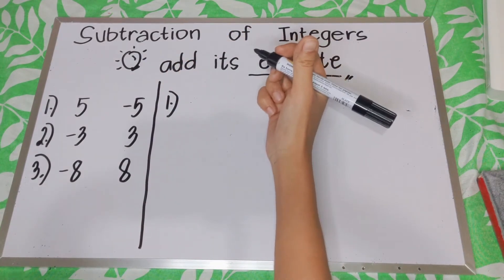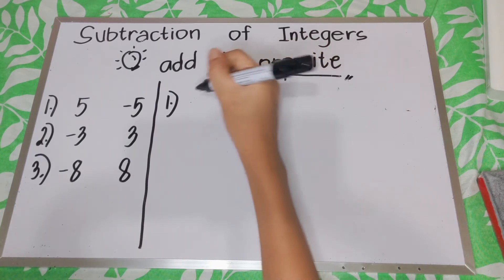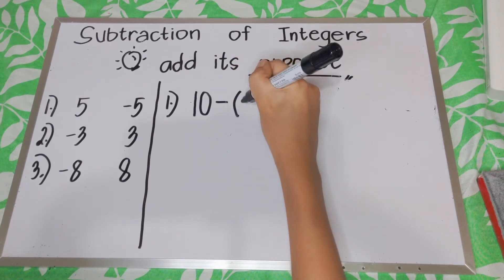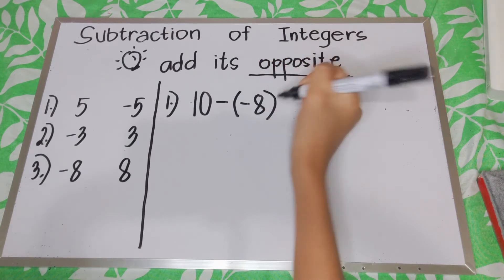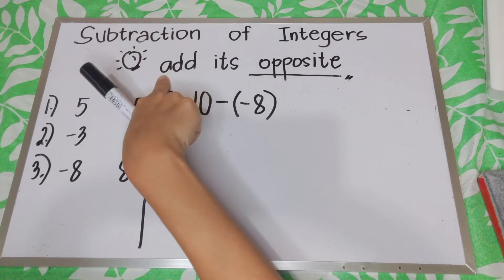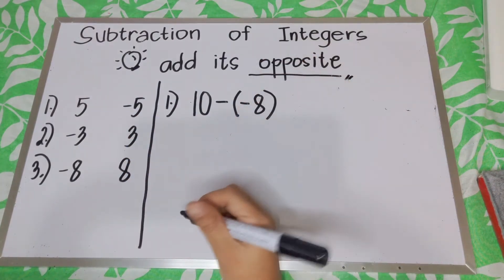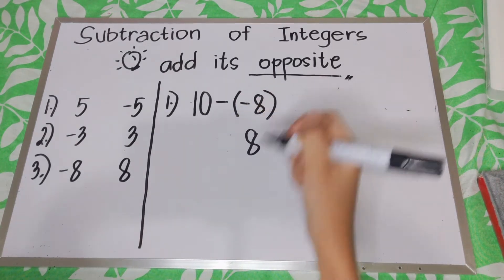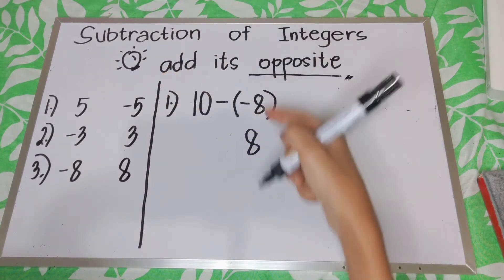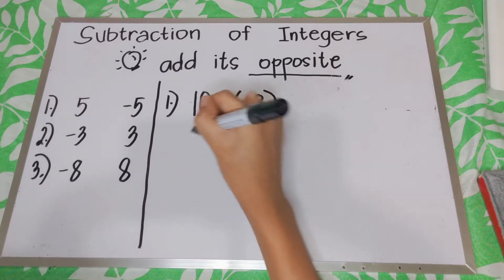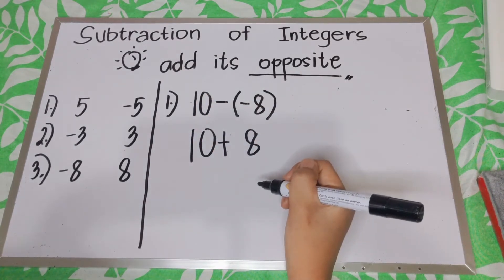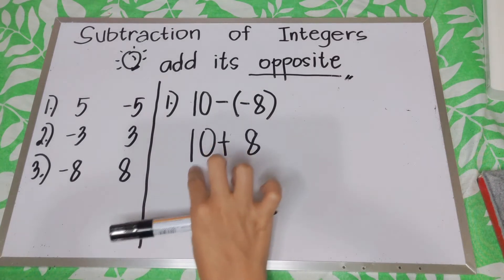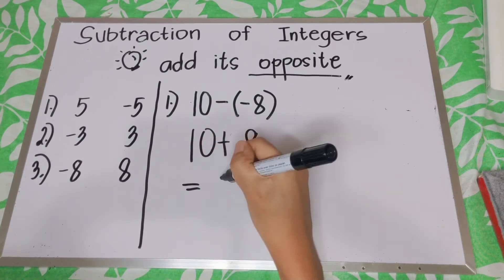For example, we are going to subtract positive and negative numbers. Say we have 10 minus negative 8. You need to consider that you have to add its opposite. So what is the opposite of negative 8? We have positive 8. So we add the opposite, and from 10 minus negative 8, it becomes 10 plus 8. Therefore, the answer will be 18.